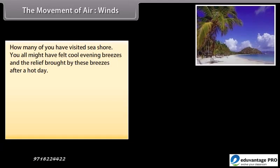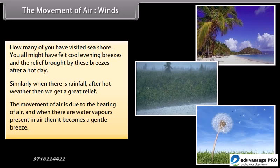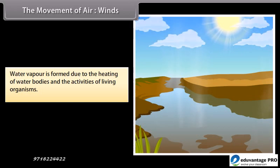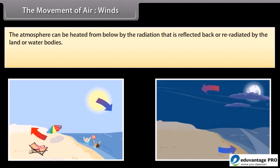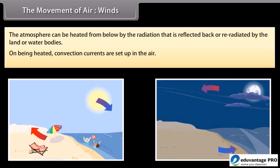You may have felt cool evening breezes at the seashore and the relief brought by these breezes after a hot day. Similarly, rainfall after hot weather brings great relief. The movement of air is due to the heating of air, and when water vapors are present in the air, it becomes a gentle breeze. Water vapor is formed due to the heating of water bodies and the activities of living organisms. The atmosphere can be heated from below by radiation reflected or re-radiated by the land or water bodies, setting up convection currents in the air.